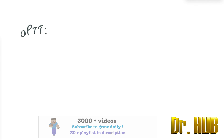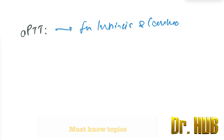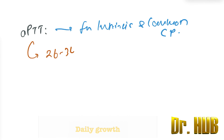Next, we look at APTT — Activated Partial Thromboplastin Time. It is used to monitor the functioning of the intrinsic and common coagulation pathway. The normal APTT is about 26 to 34 seconds.